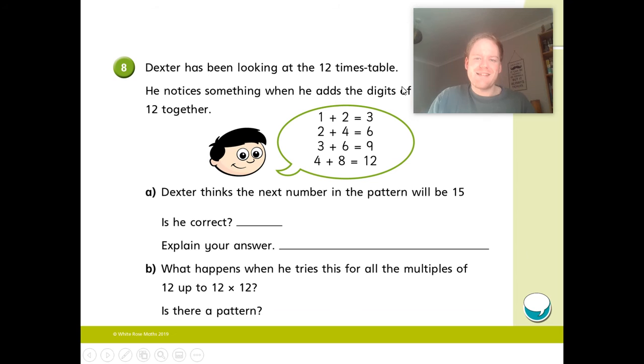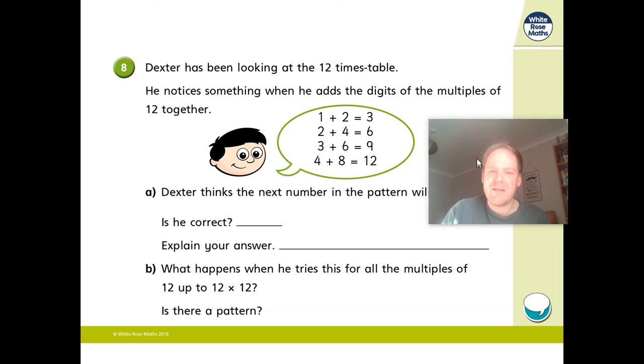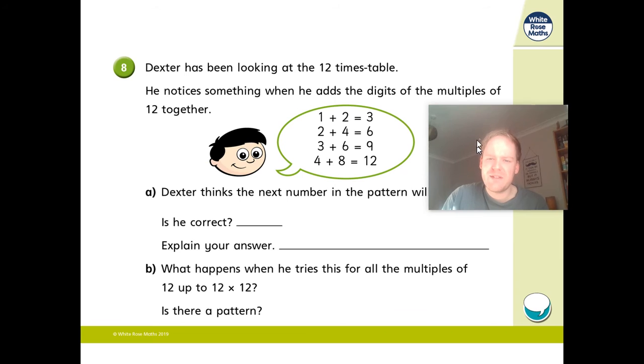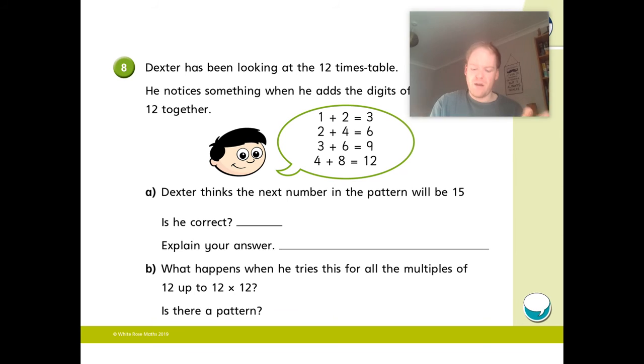Okay, number eight. Dexter's been looking at the 12 times table. He notices something when he adds the digits of multiples of 12 together. So one add two, so part of 12, one add two is three. Two add four, 24 is six. Three add six is nine. Four add eight is 12. So you notice you've got three, six, nine, 12. Three times table.